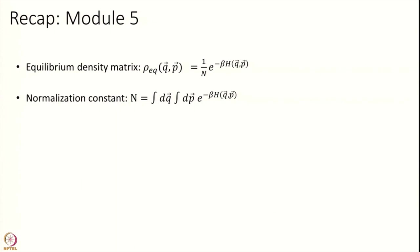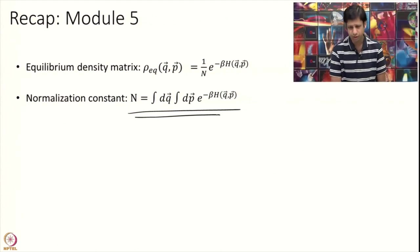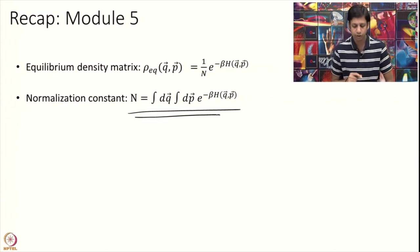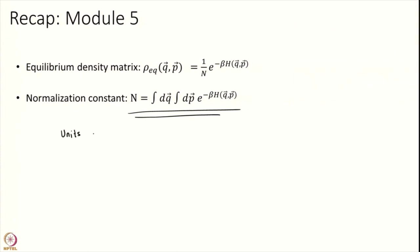We will recap something from 10 modules ago, where we derived something very fundamental: at equilibrium, the classical density matrix looks like (1/N)·e^(−βH), and N, which is a normalization constant, equals the integral of e^(−βH) dq dp. You can go back to that module where we did this derivation in phase space. The first thing we note is: what are the units of N? We see this is dimensionless — it is an exponential — so the units of N are the same as the units of dq·dp.